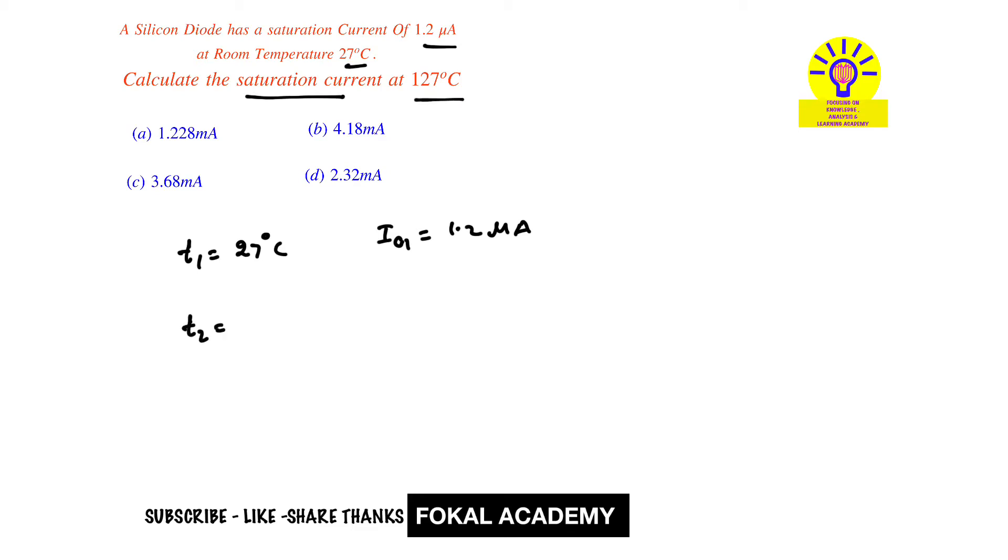We have one relation between these parameters: Io2 equals Io1 times 2 to the power of (T2 minus T1) divided by 10. In this equation, current is taken in amperes and temperature in centigrade.